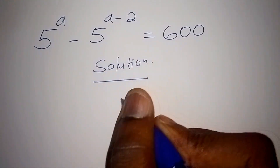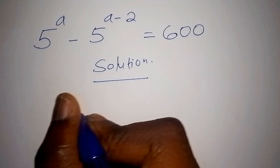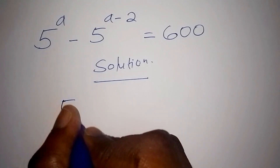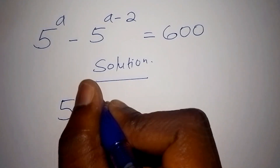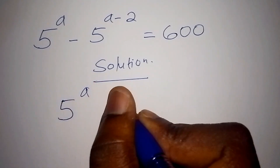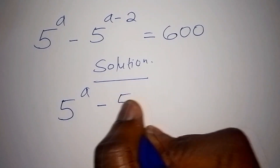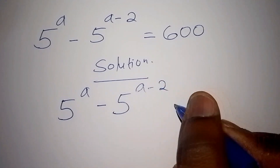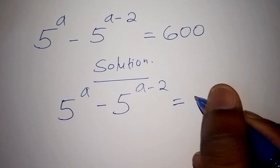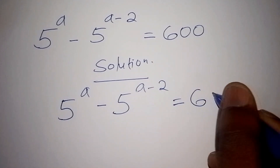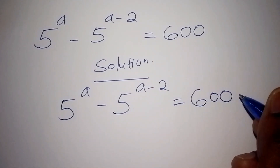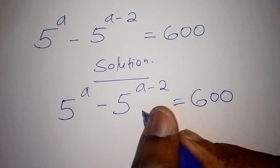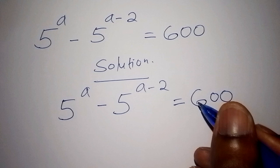On the solution, we have 5 to the power of a, then minus 5 to the power of a minus 2, which equals 600. In this case, we are asked to solve for the value of a.